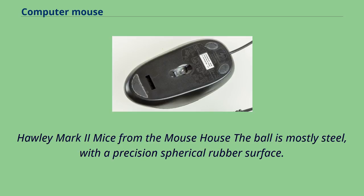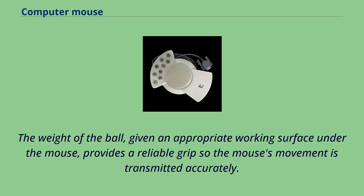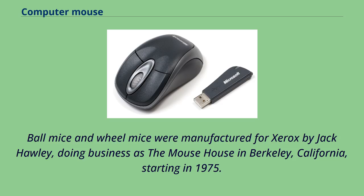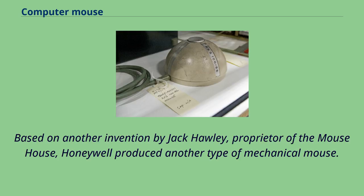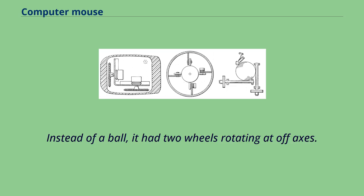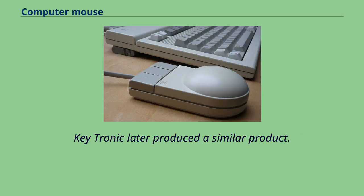The ball is mostly steel with a precision spherical rubber surface. The weight of the ball, given an appropriate working surface, provides a reliable grip so the mouse's movement is transmitted accurately. Ball mice and wheel mice were manufactured for Xerox by Jack Hawley, doing business as the Mouse House in Berkeley, California, starting in 1975. Honeywell produced another type of mechanical mouse based on an invention by Jack Hawley, using two wheels rotating at off-axes instead of a ball. Keytronic later produced a similar product.